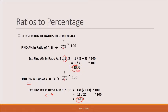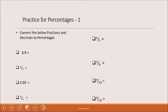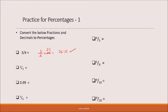So the ratio formula is the same. But if you go to the initial stages, we will go to the practice session. Convert the below fractions or decimals to percentages. Percentages are the math. So here, 3 by 4 into 100 is equal to 75 percentage. So 75 percentage is the answer.